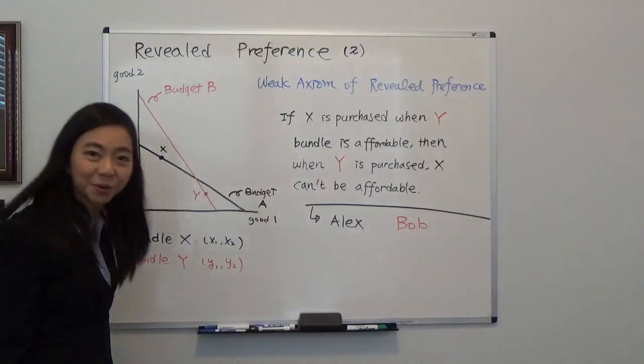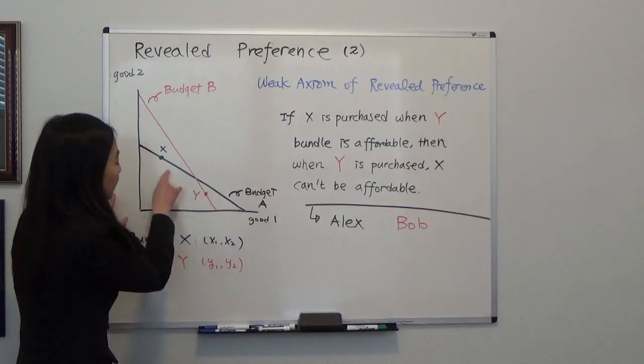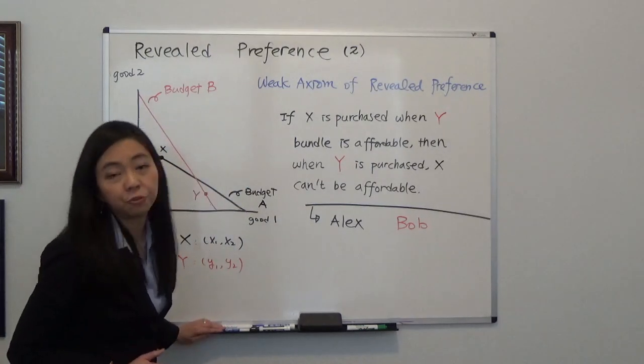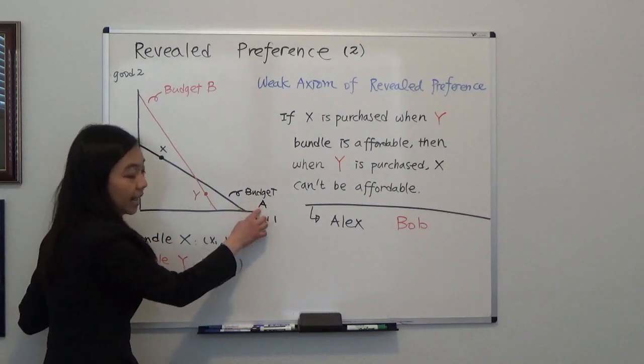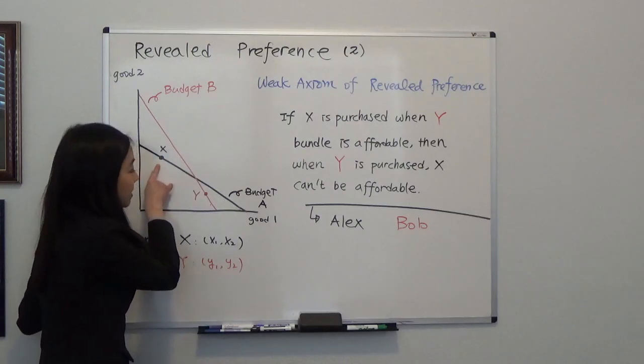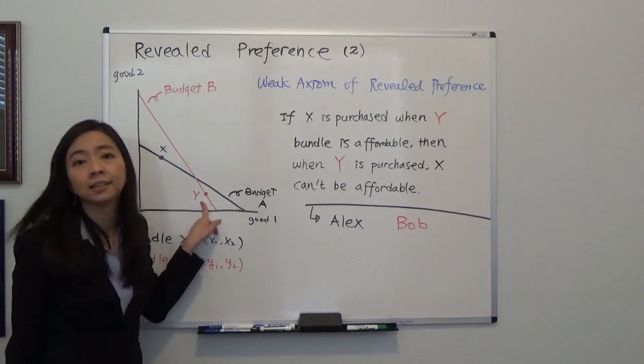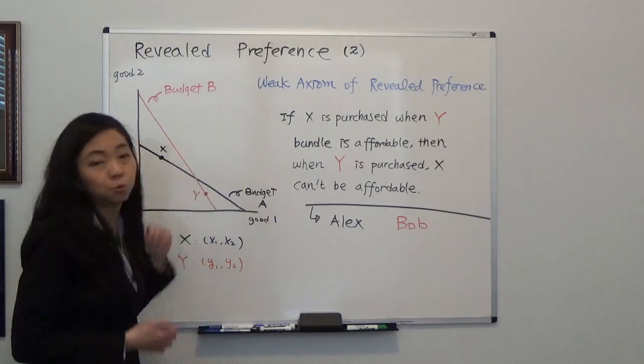So going back to our diagram, this is our budget line. So we say this diagram is a violation of weak axiom of revealed preference. Why is that? So we see under budget line A, you purchase bundle x. And at that time, your bundle y is available because it's within the budget line. So I know that you must prefer x to y.